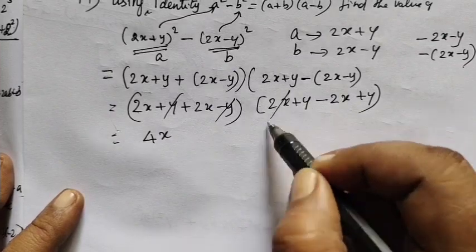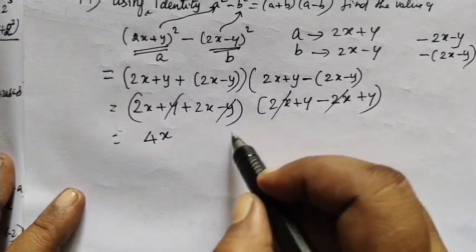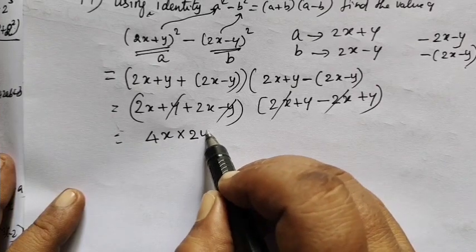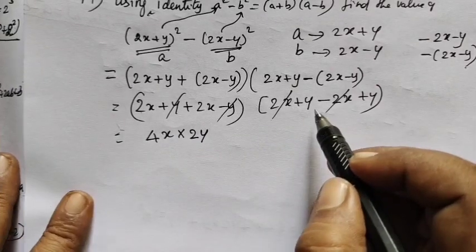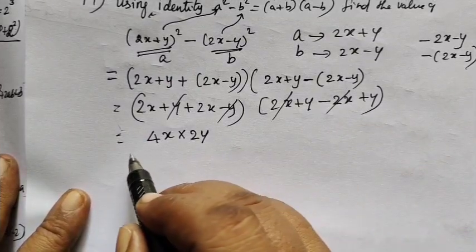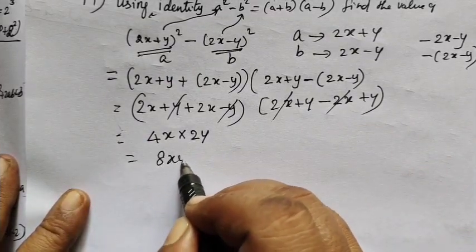There is a plus b. Now, I get the plus b. 4x plus b. 2x minus y. Now only I come to know. So answer is 8xy.